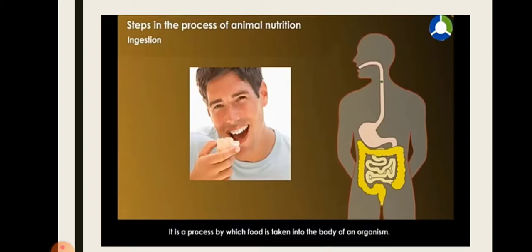Hummingbirds and honey bees suck nectar from plants. Some animals like frogs or snakes directly swallow food. Cattle feed on grass, and we eat through our mouth — we chew the food and then swallow. So the first step by which food is taken into the mouth or inside the body of an organism is called ingestion.